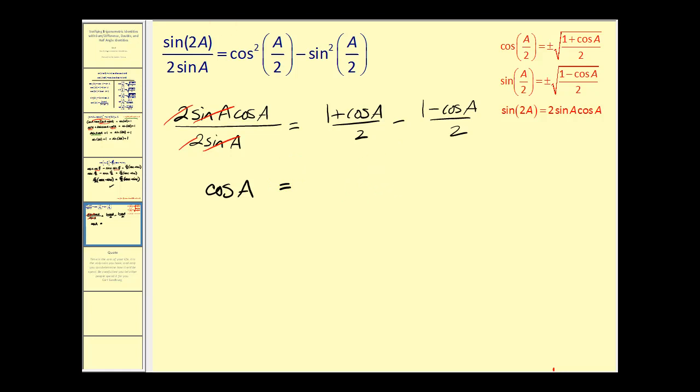Now we do have to be careful when we do this. We're subtracting this entire quantity. So let's put our parenthesis in place. Denominator is two. Next we have one minus one. That's zero. And then we have cosine a minus a negative cosine a. So that will give us two cosine a.